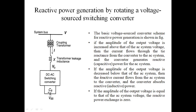If the amplitude of the output voltage V0 decreases below the system AC bus voltage V, then the reactive power current flows from the AC system to the converter — the converter absorbs reactive power. When V0 < V (i.e., V > V0), the converter is absorbing reactive power. Third condition: if the amplitude of the output voltage V0 equals the AC system voltage V, the reactive power exchange is zero.